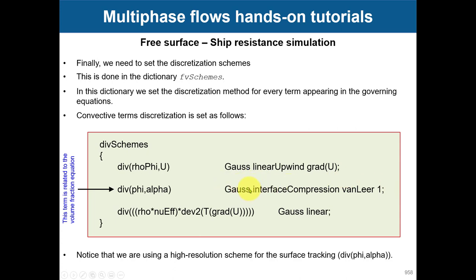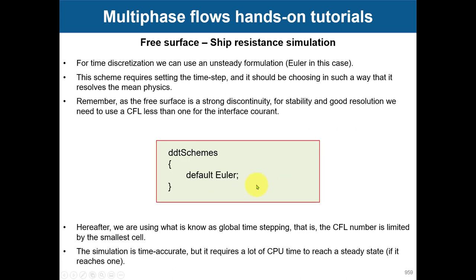More advanced options include selective reconstruction of the interface, but that is more complex. For time discretization we go fully unsteady with Euler. You can also use Crank-Nicolson, but Euler is usually recommended here. Keep your CFL number low for these simulations.